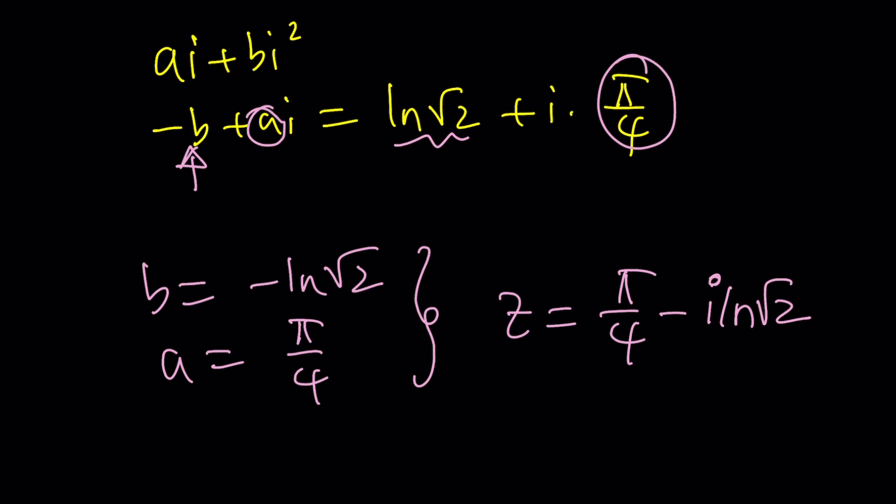Isn't there another way to approach it? Absolutely. Let's go ahead and look at it from another perspective, which I usually call the second method. So what's our equation? e to the iz equals 1 plus i. By the way,